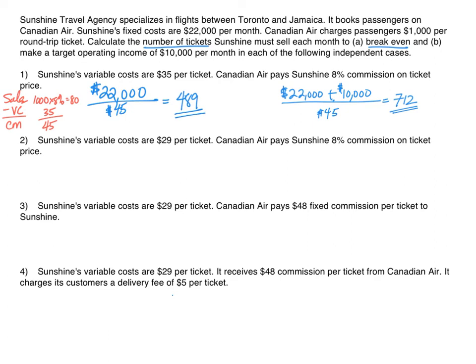Press pause on your player now and work through problems two, three, and four. It's the same problem with different scenarios. See if you can come up with the breakeven in tickets for each scenario, as well as the number of tickets to earn a $10,000 profit. Then come back and we'll look at the answers together.